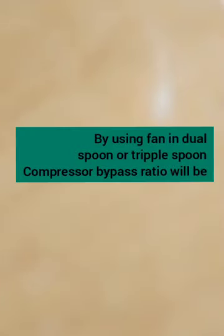By using a fan in dual spool or triple spool compressor, bypass ratio will be — Option A: 10 to 1. Option B: 5 to 1. Option C: 20 to 1. The correct answer is 5 to 1.